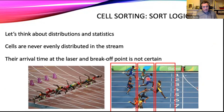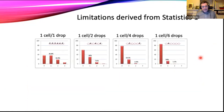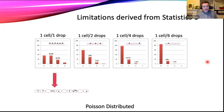We also need to think about the maths of cell sorting. You might think that if you're running cells at 10,000 cells per second you'd get one cell every drop — but life isn't like that. Cells are never randomly distributed in the stream: sometimes one cell, then very quickly another, then a big gap, then maybe three cells very closely together. Occasionally a drop has one cell, sometimes two or three. We're governed by Poisson statistics: if we're making drops at 60,000 per second, about a third of drops would have no cells, about a third would have one cell, and about a third would have more than one cell — and that last situation is what we want to avoid.